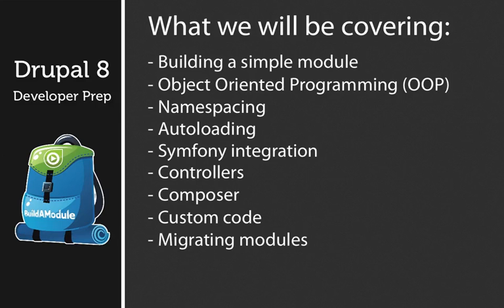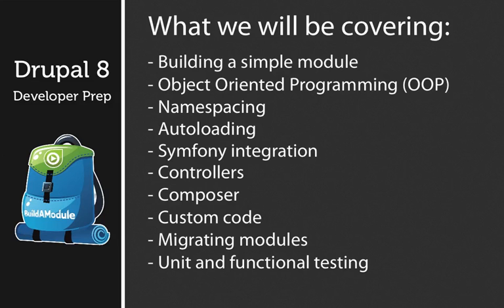We'll look at unit and functional testing. A big benefit of object-oriented programming is that it becomes much easier to test your code, and solid testing means that you'll find problems much faster and have an easier time troubleshooting issues. We'll discuss the different types of testing and how to write tests for your Drupal modules. And finally, we'll discuss plugins — there's a new concept in Drupal 8 called a plugin. We'll talk about what that is, how they exist, and look at some examples of how they work.